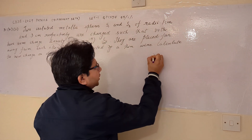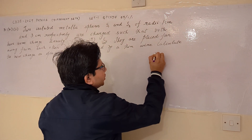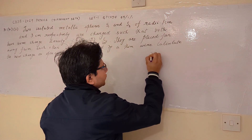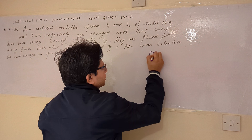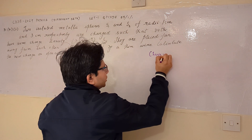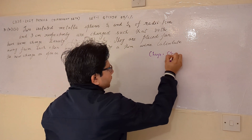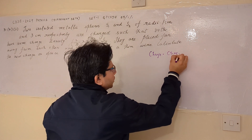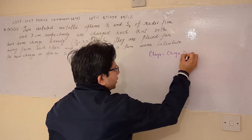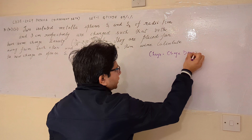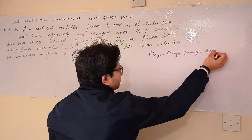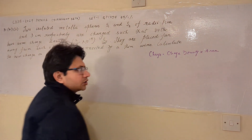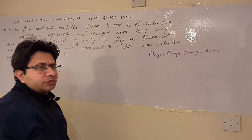Some particular concepts which are used here are: first of all, the charge is equal to charge density multiplied by area. This particular concept we use.